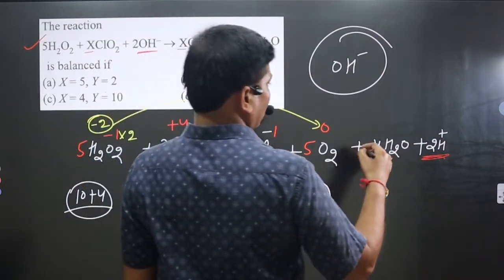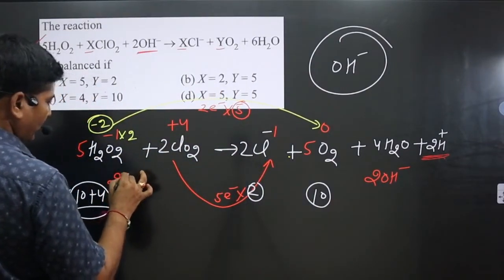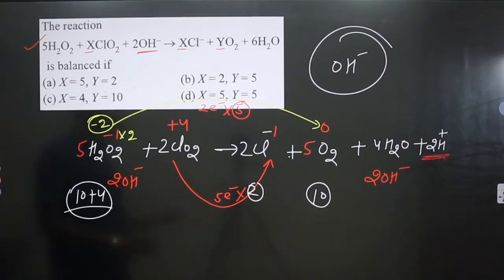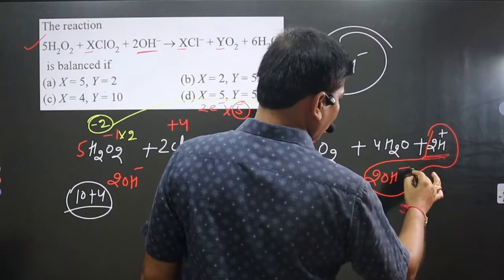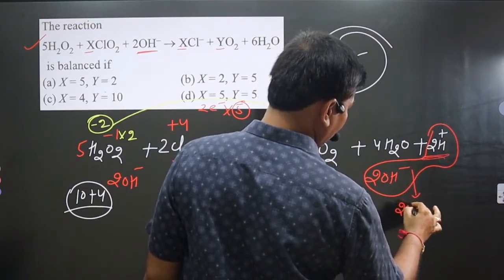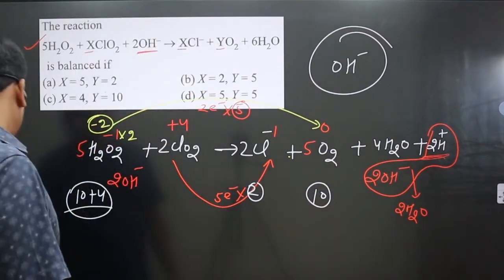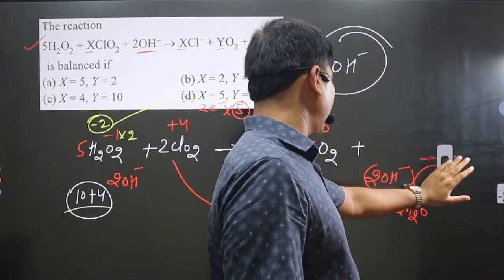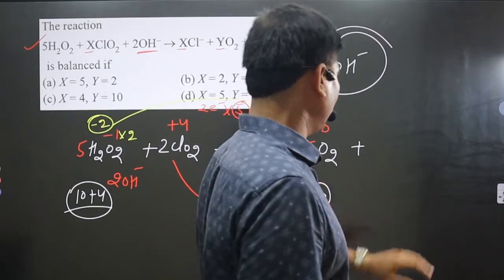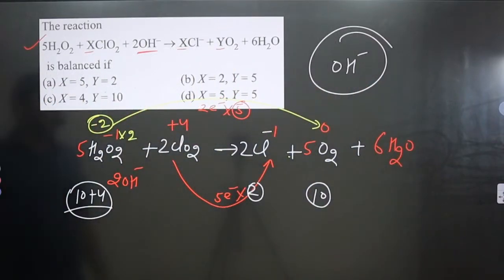We add 2OH⁻ on the right side and 2OH⁻ on the left side, equal to the number of H⁺ ions. The 2H⁺ and 2OH⁻ combine to form 2H₂O. Adding the 4H₂O already on the right side gives 4H₂O + 2H₂O = 6H₂O. We remove the separate terms and directly write 6H₂O on the right side. On the left side we have 2OH⁻.